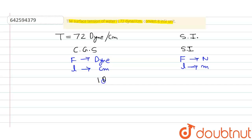So we all know that one dyne is equal to 10 raise to minus 5 newton, and we also know that one centimeter is equal to 10 raise to minus 2 meter. So we want to convert it into SI units.